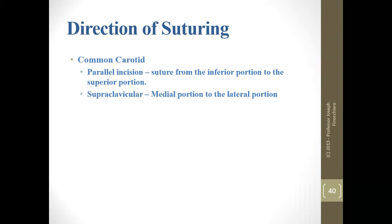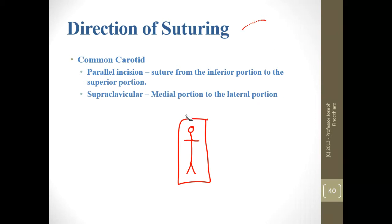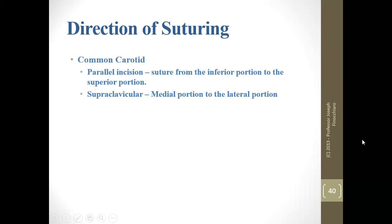The textbook gives direction of suturing based on where you should be standing — which is not where a lot of people actually stand. For the common carotid with a parallel incision following along the artery, suture from the bottom to the top. If you did the supraclavicular — the incision right above the clavicle — start in the middle and go to the end. That is the textbook.